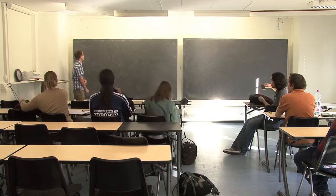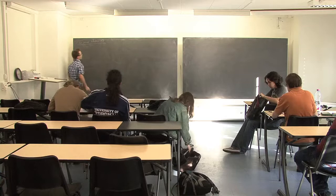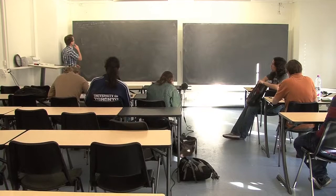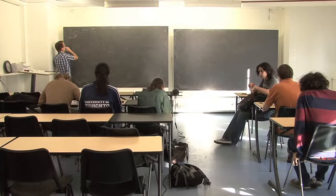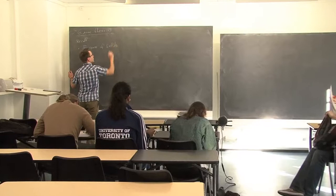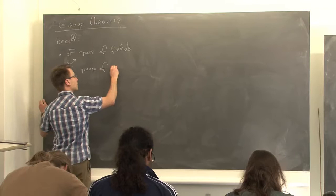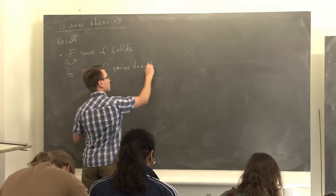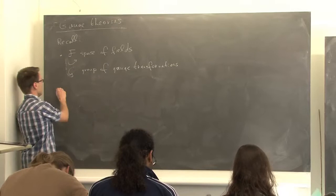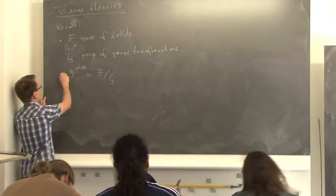Today will be a continuation of last week's lecture on gauge theories. I'll give more examples of gauge theories that Anton already mentioned last time. Let me remind you what happened. In a gauge theory, we consider a space of fields together with an action of the gauge group, which I'll call script G — it's a group of local gauge transformations. We have the space of physical fields, which is the quotient of the space of fields by the group of gauge transformations.